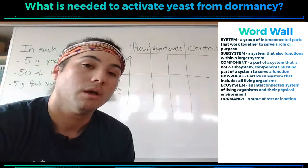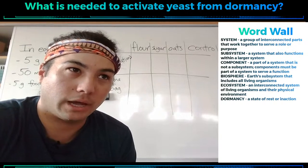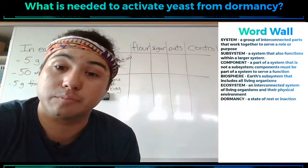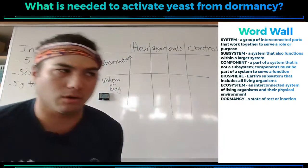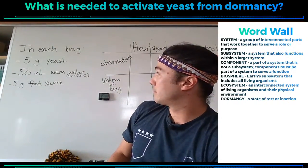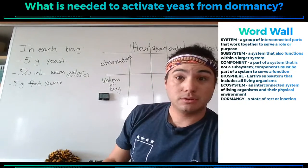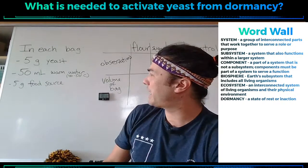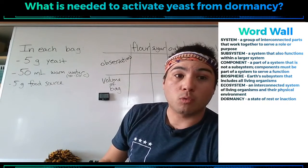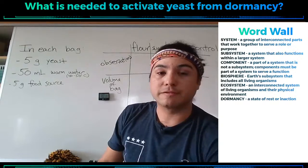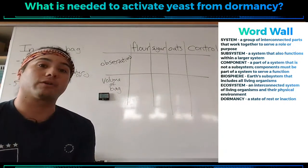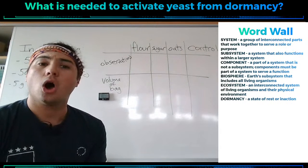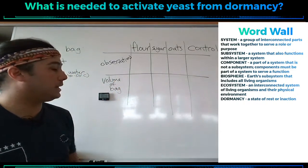Oats and our control — so we're going to test those four things today. In order to test what kinds of food, what kinds of nutrition yeast needs to activate and likes best, we're going to keep everything else the same. In each bag, we're going to have the same measurements of everything else. The only variable is the kind of food in the bag. In each bag there's going to be five grams of yeast, 50 milliliters of warm water, and five grams of a food source — five grams of flour in one bag, five grams of sugar in one bag, five grams of oats in one bag, and no food in the control, because we want to know how it compares to just hot water on its own.